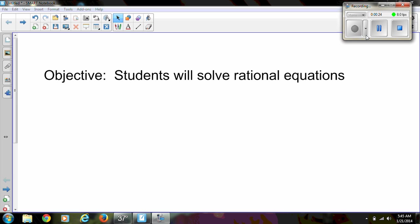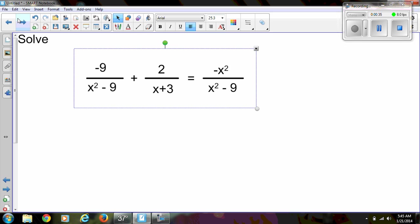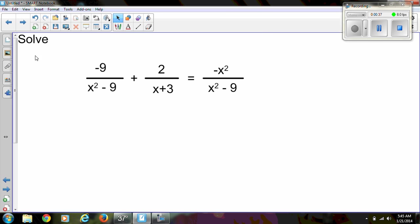Okay, our objective for today is students will solve rational equations. This is not a new topic, we've covered it once, so this will be just a quick review. Let's begin. Our first problem is negative 9 over x squared minus 9 plus 2 over x plus 3 is equal to negative x squared over x squared minus 9.